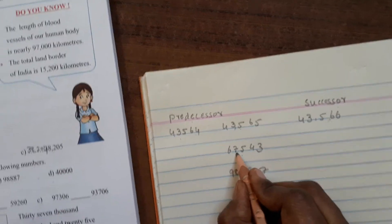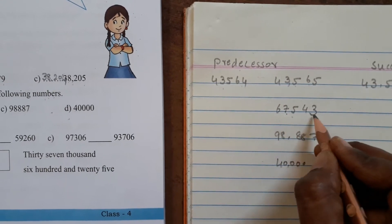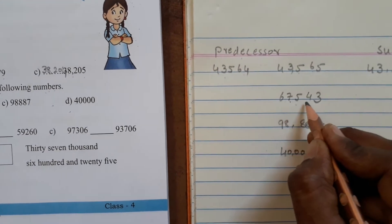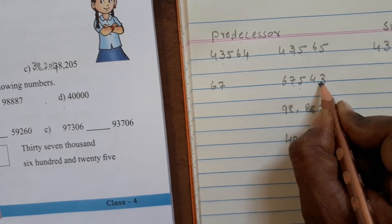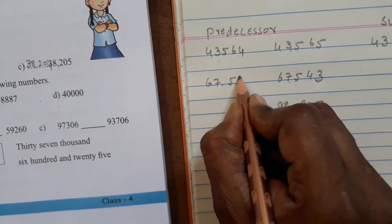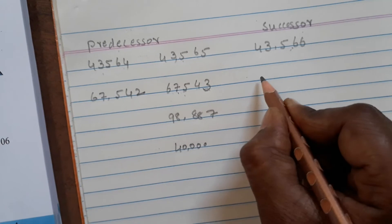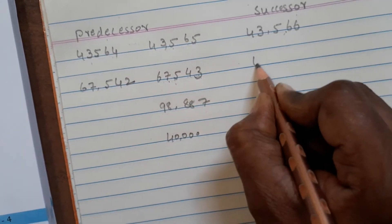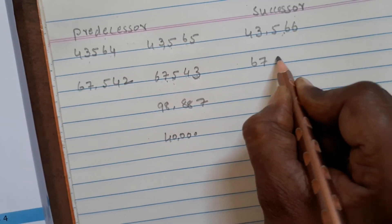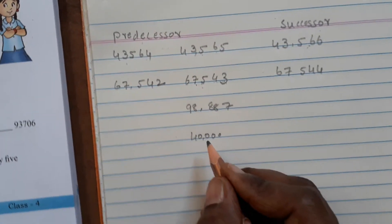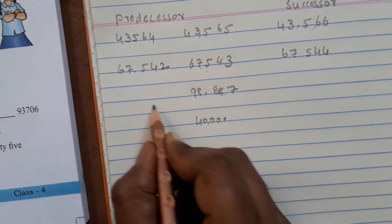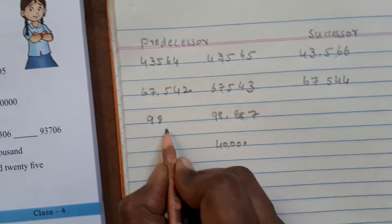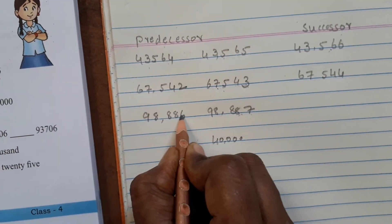In this number: 67,543. The predecessor number is 67,542. This is the predecessor number. The after number or successor number: 67,544 is the successor number. Next: 98,887 — 98,886 is the predecessor number.